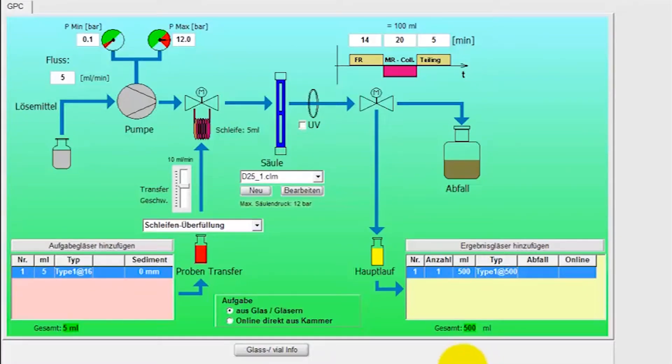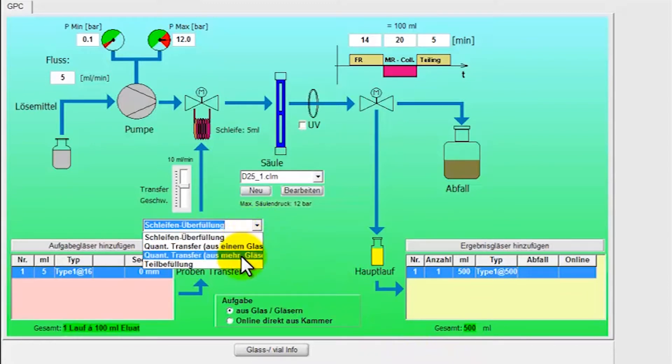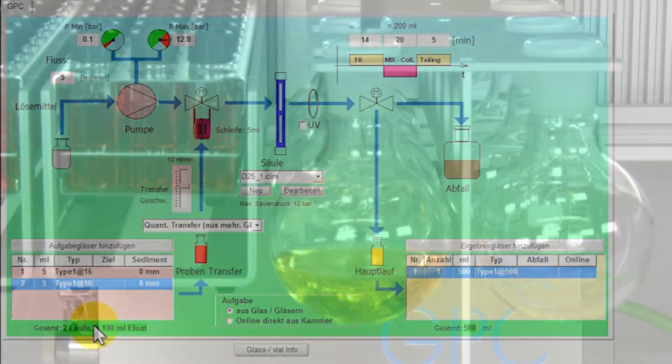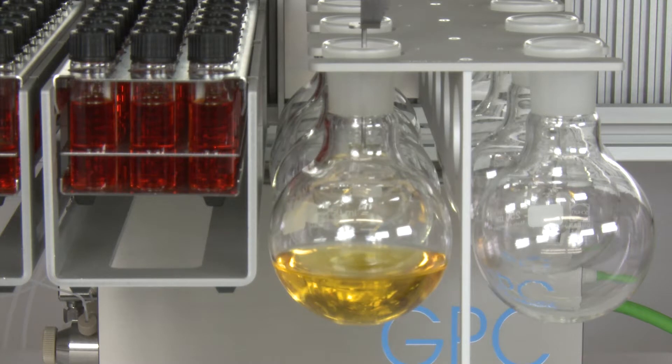Several injection procedures are available. With these, as is customary for example in dioxin analysis, multiple injections and quantitative transfer of a sample can be performed and then collected in a glass flask.